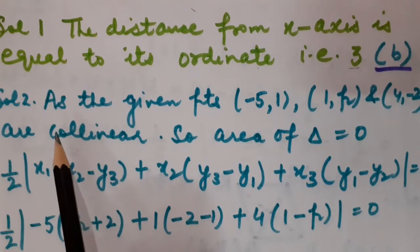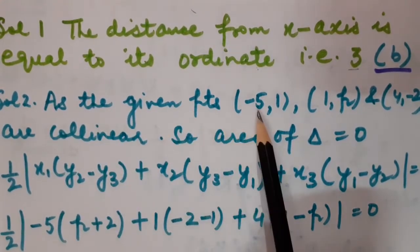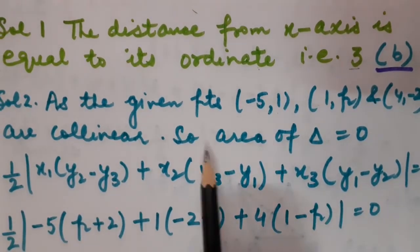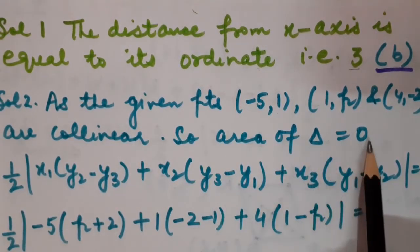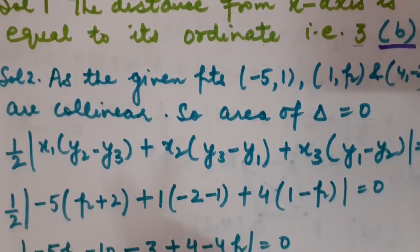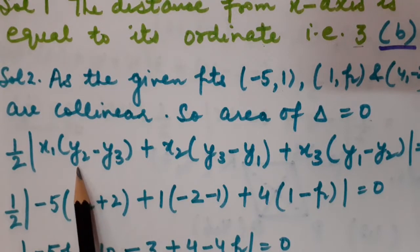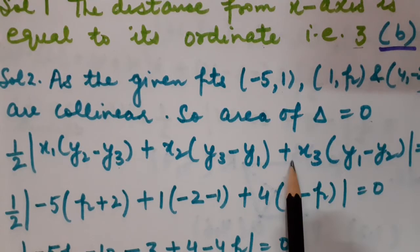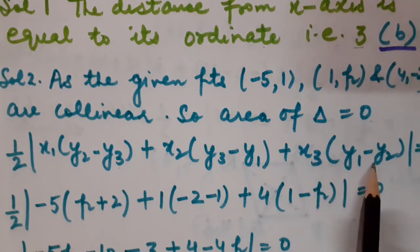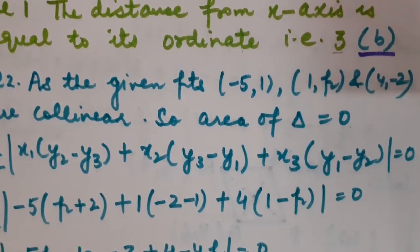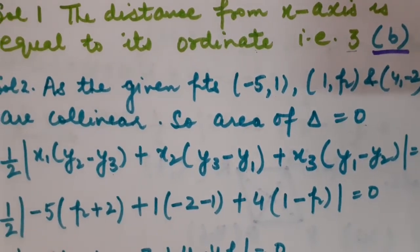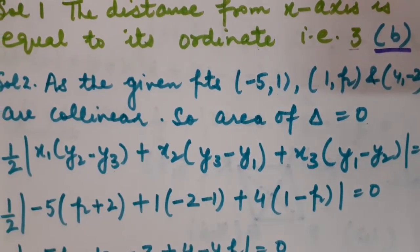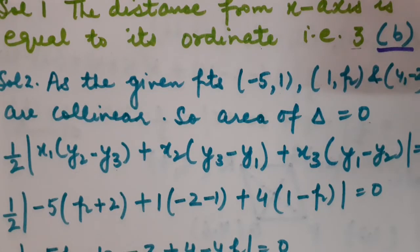As the given points (-5,1), (1,P) and (4,-2) are collinear, we can say that area of triangle is equal to 0. The formula of area of triangle is: half × |x₁(y₂−y₃) + x₂(y₃−y₁) + x₃(y₁−y₂)| = 0. I have put it equal to 0 because if points are collinear, they all lie on the same line, so no triangle will be formed.